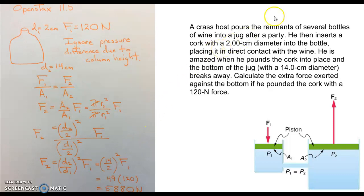A crass host pours the remnants of several bottles of wine into a jug after a party. He then inserts a cork with a 2 cm diameter into the bottle, placing it in direct contact with the wine. That is, no air gap at the top of the jug. He is amazed when he pounds the cork into place, and the bottom of the jug, with a 14 cm diameter dimension, breaks away. Calculate the extra force exerted against the bottom if he pounded the cork with a 120 N force.